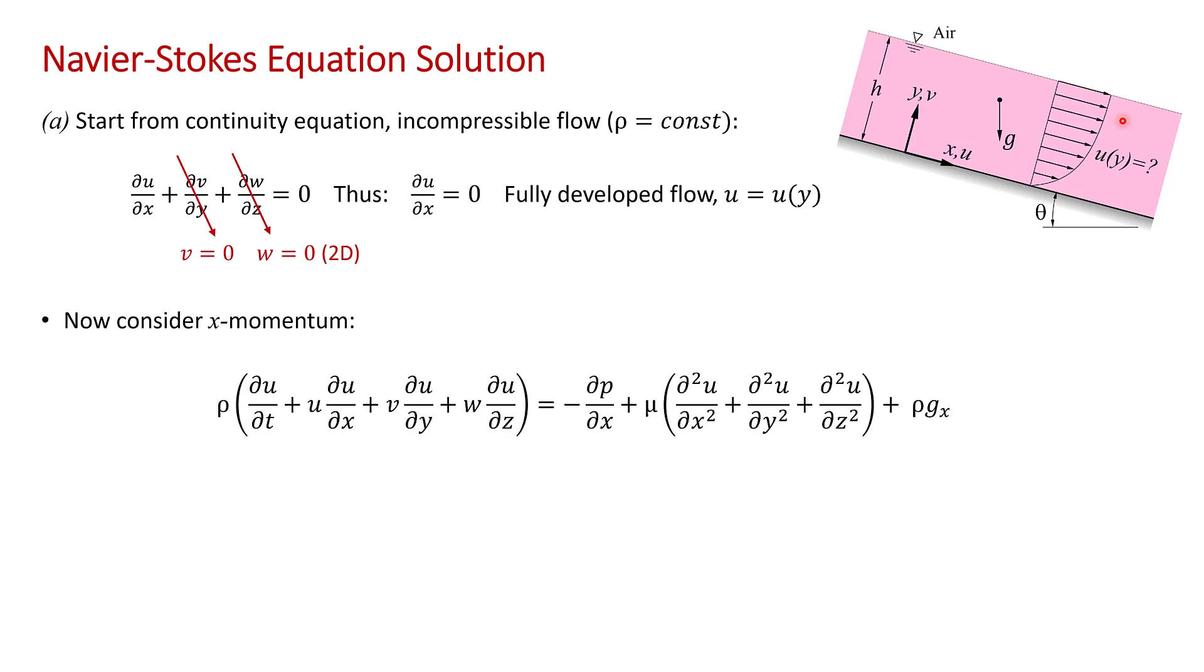To get u(y), we need to next consider the conservation of momentum in the x direction. So this is the x Navier-Stokes equation. Recall that these are the acceleration terms. This is the pressure gradient term. These are the viscous terms. And here we have the gravity term.